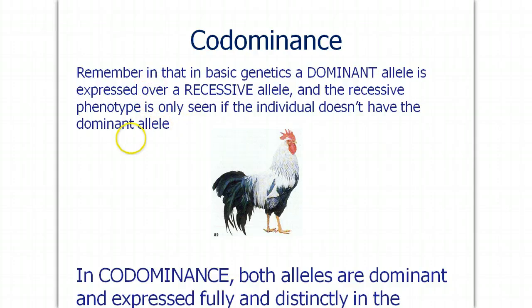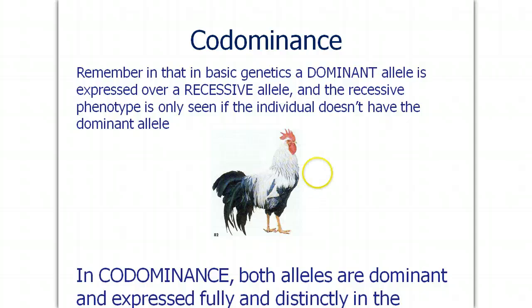Codominance is where both alleles are dominant. Remember, dominant is usually over recessive. In chickens, however, white feathers and black feathers are both expressed equally — they're codominant to each other. If you have the white feather allele and the black feather allele, you'll have white and black feathers. Don't confuse codominance with incomplete dominance, which is a blending of traits. In codominance, they're expressed equal and separate from each other. Also, blood types are codominant — if you have the A and B allele, you express both separately on those red blood cells.